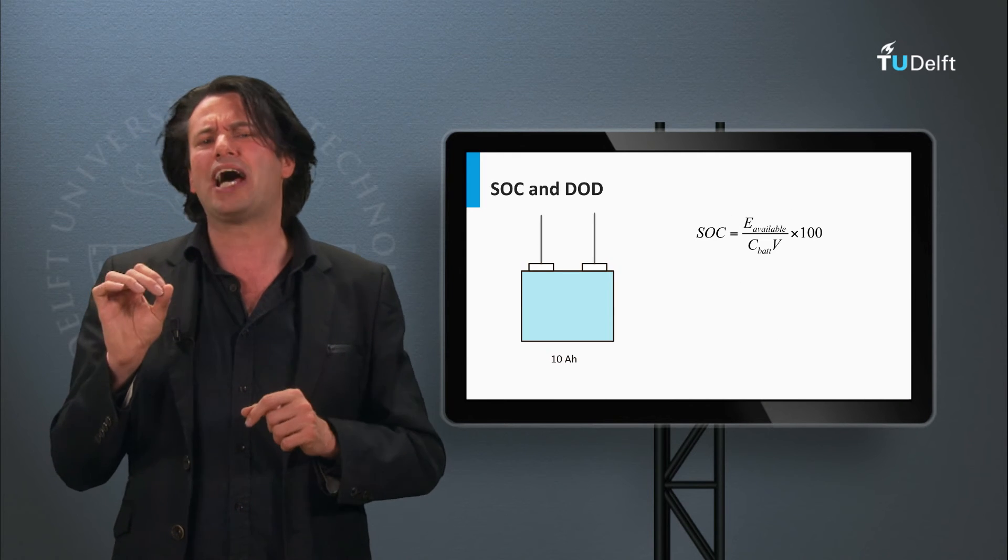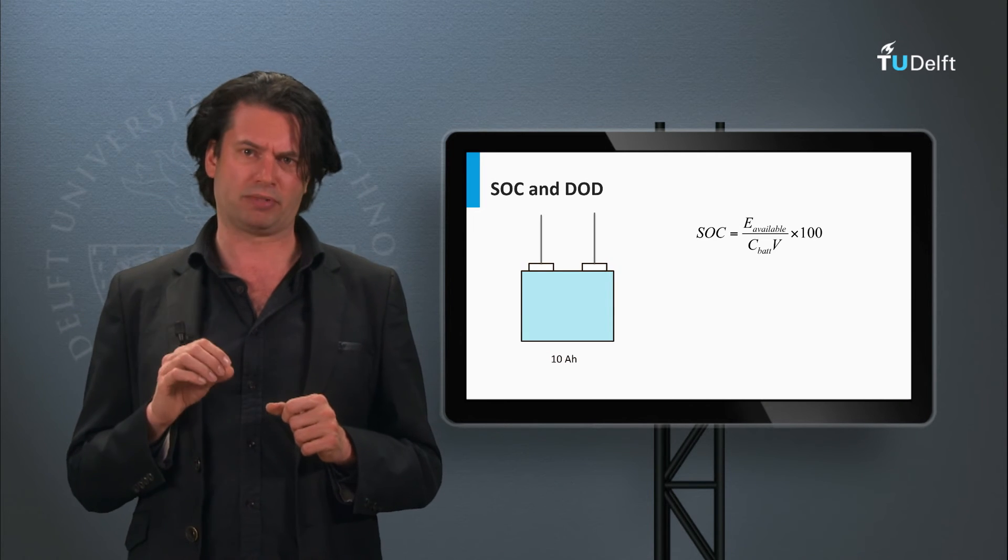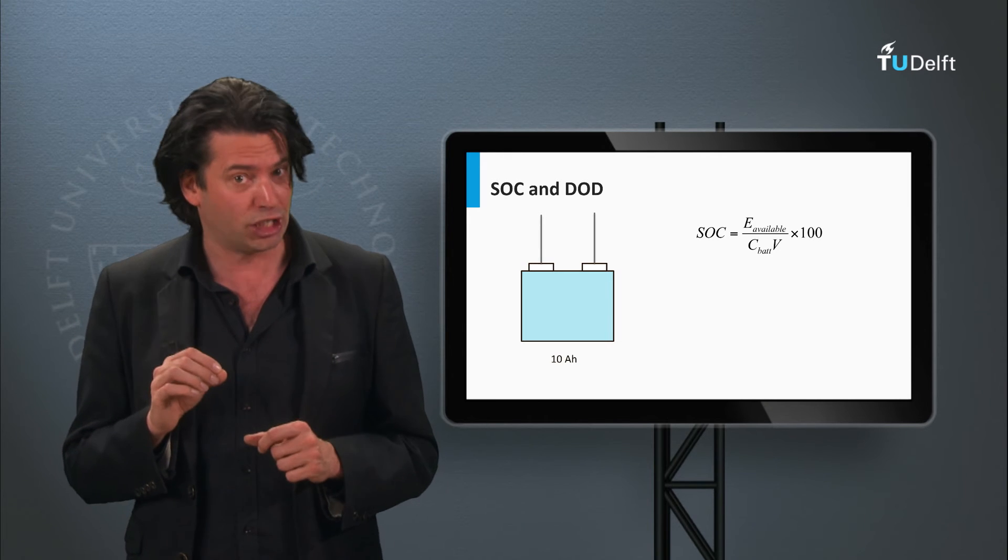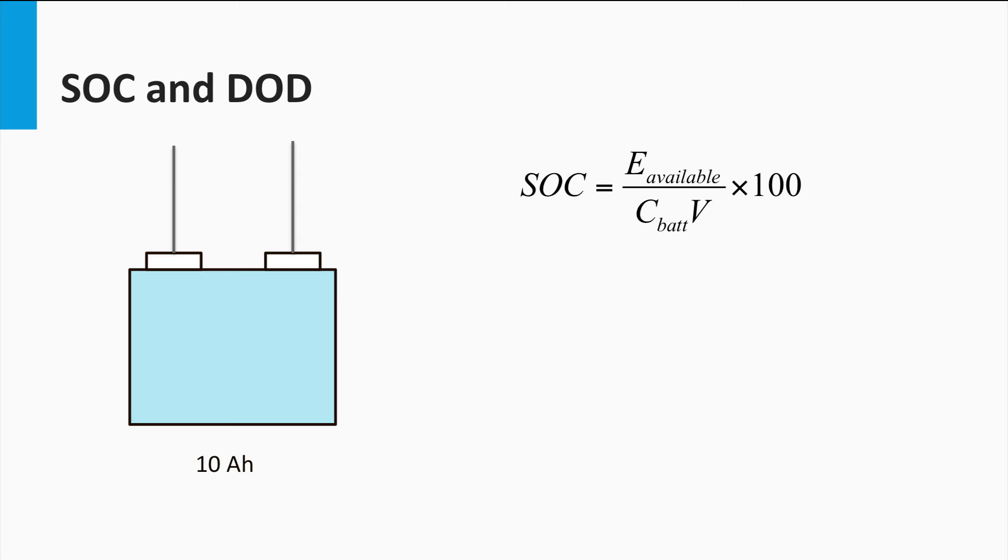Now let's look at another important battery parameter, the state of charge or the SOC. This is defined as the percentage of the battery capacity available for discharge. This 10Ah rated battery that has been drained by 2Ah is said to have a state of charge of 80%.